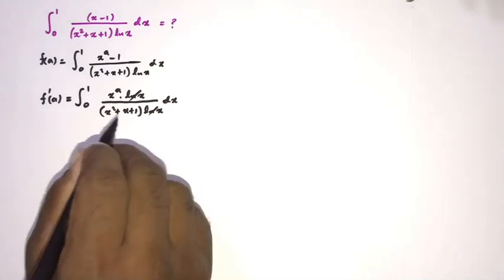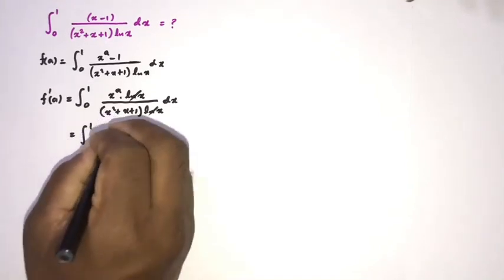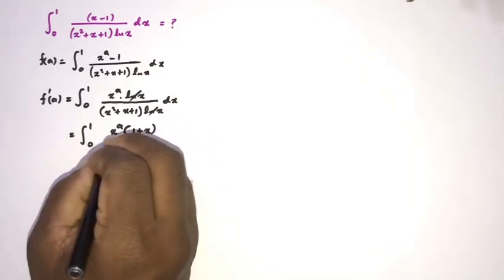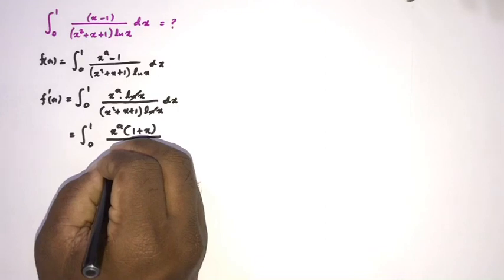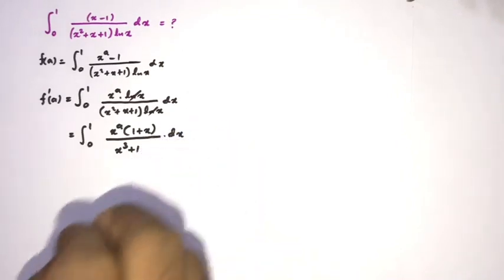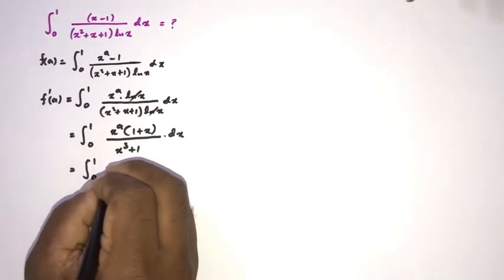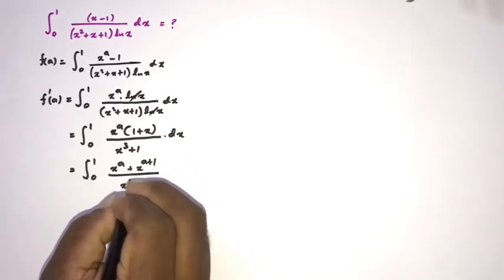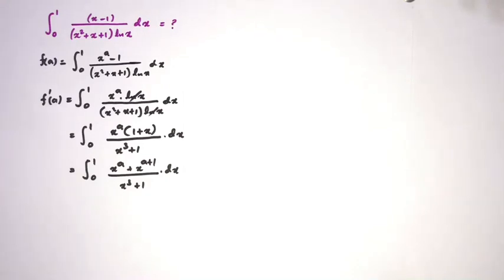We can multiply both numerator and denominator by (x plus one). So we write the integral from zero to one of x to the a times (one plus x) over (x cubed plus one), dx. Expanding gives the integral from zero to one of (x to the a plus x to the a plus one) over (x cubed plus one), dx.